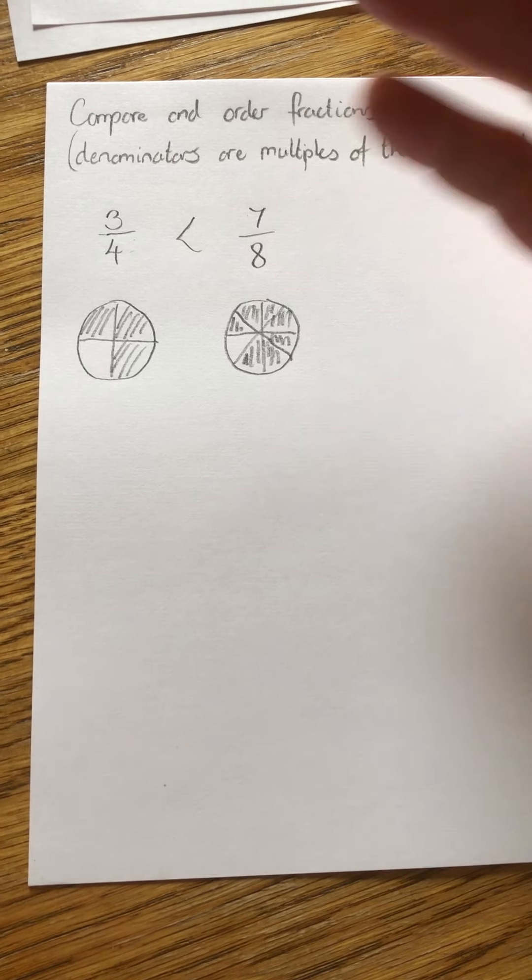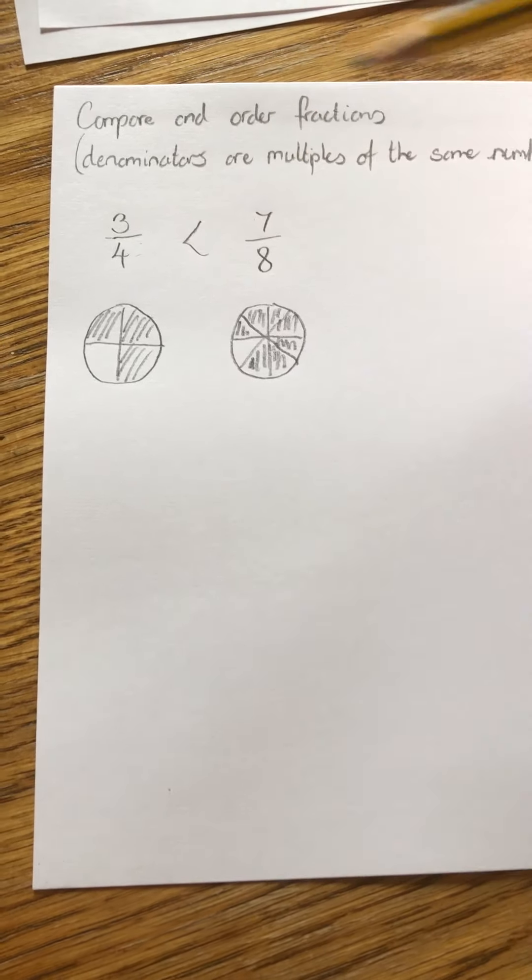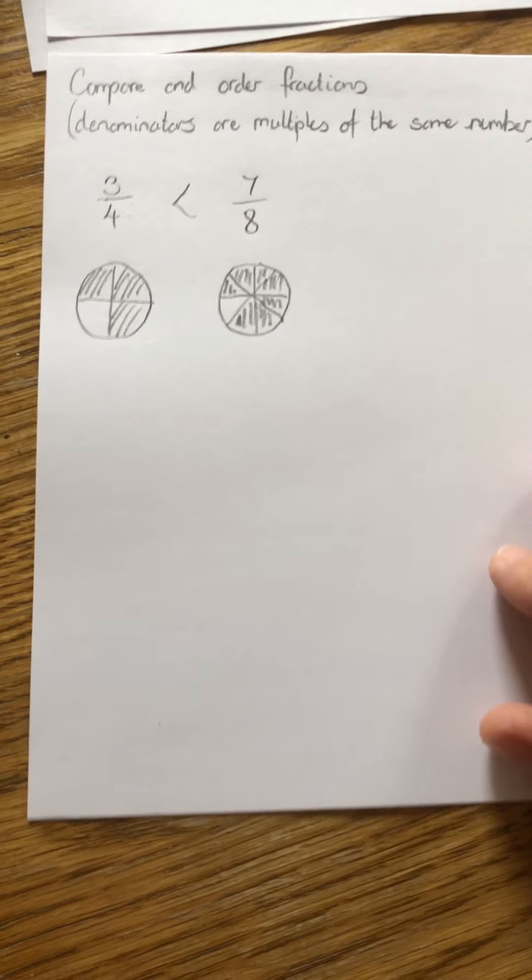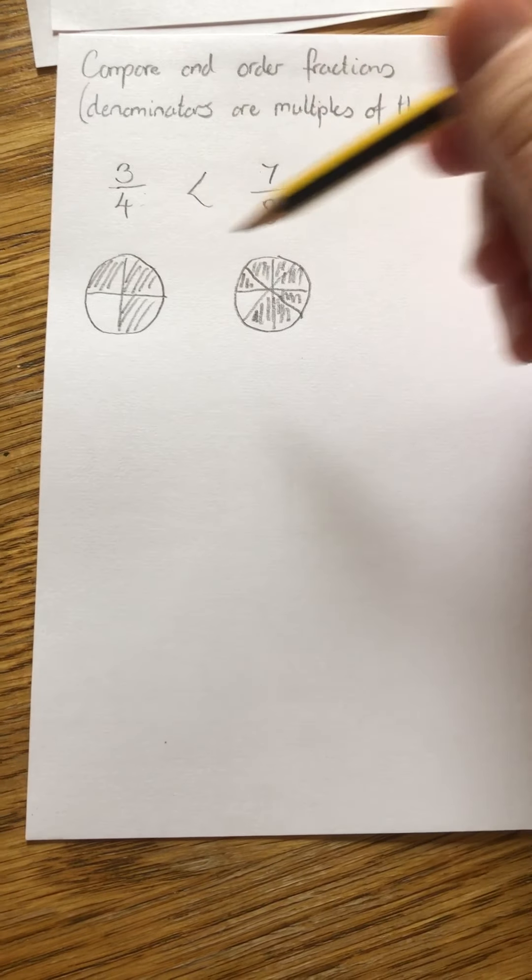So I can do it that way, which is great if they're easy to draw, but if I get to odd numbers like sevens, it's quite tricky to draw. So I've got to think of a different way. So drawing's great to start us off.